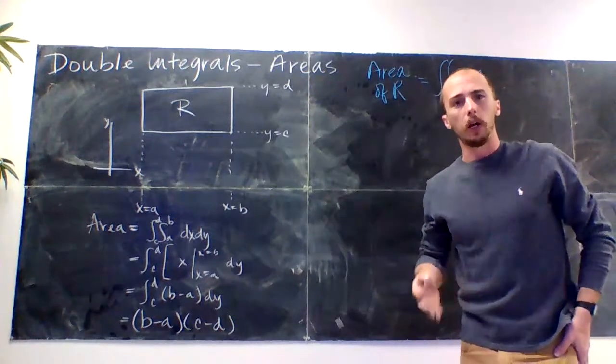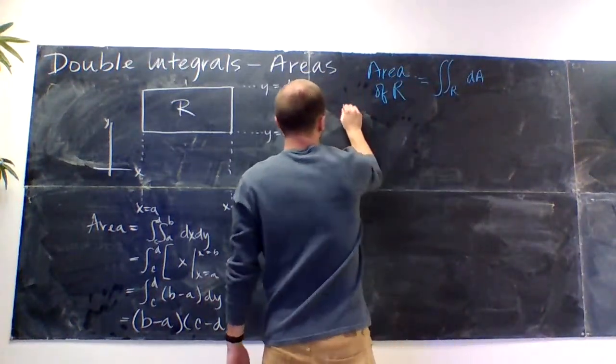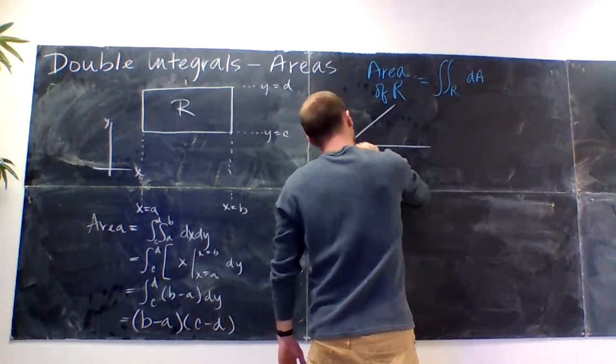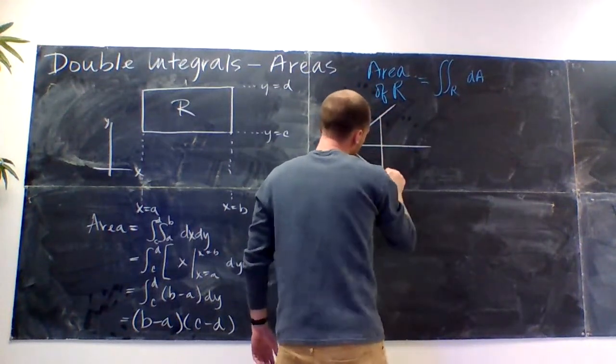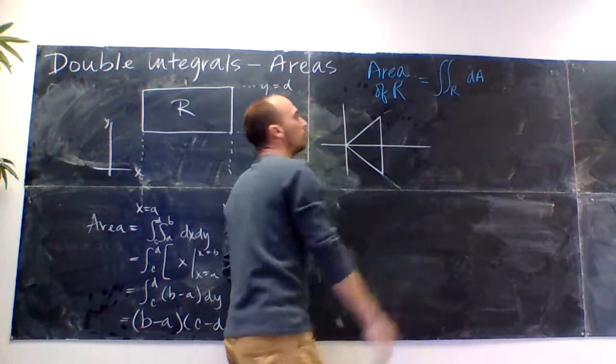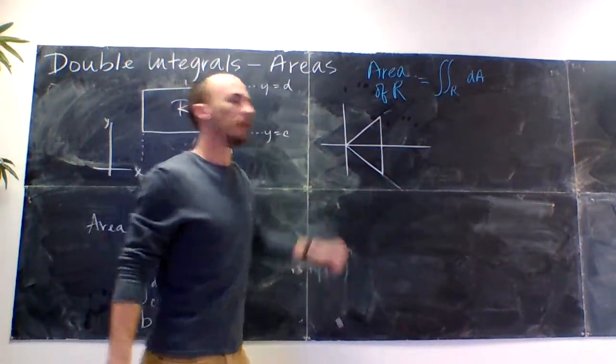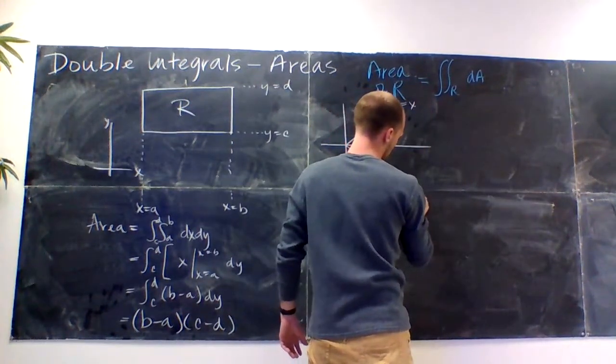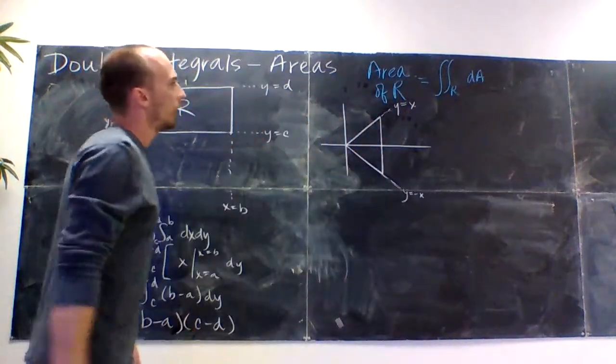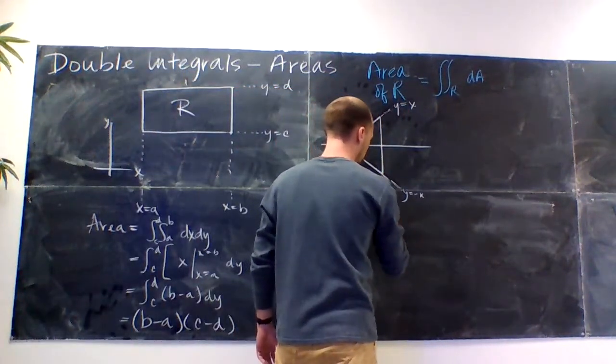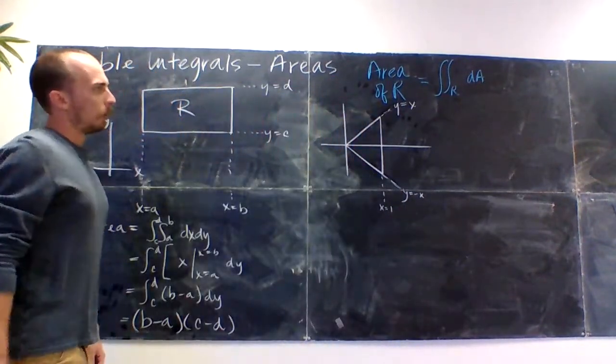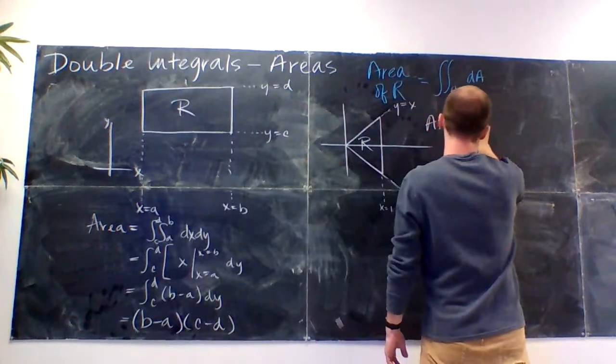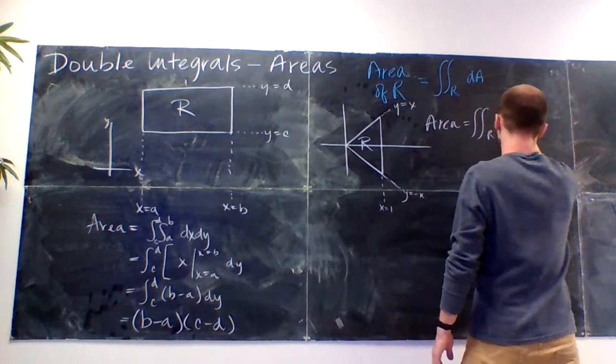For another example, let's look at a triangle. All right. So I think for ease, I'm going to let this be y equals x and y equals negative x. Y equals x, y equals negative x, and then this will be x equals 1. Now if this is my region R, I'm going to find the area.